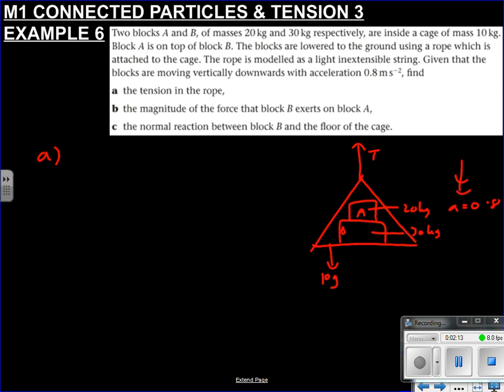So we'll start with part A. So we're trying to find the tension in the rope. What does the tension have to bear? Well, we can just make this into one particle, can't we? Because the rope has to bear the entire brunt of the cage plus block A plus block B. So in total, that's 60kg of mass. So that's 60g. It's all accelerating down with 0.8. Therefore, resolved down.